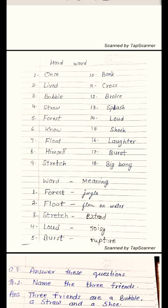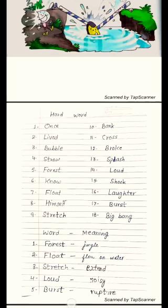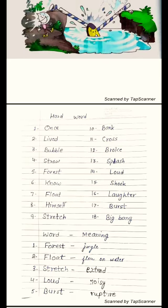Toh ye the hamare hard words. Ab inmen se kuch ki humne meaning banayi hai. Word meanings: Forest — bahut saare ped jahan par ho — jungle. Float — tairna, to flow on water, paani ke upar bahna. Stretch — S-T-R-E-T-C-H — apne ko phailaana, it means to extend. Loud — bahut tez awaaz se, its meaning is noisy — N-O-I-S-Y. Burst — phootna, kisi cheez ka fatna. Isko hum rupture bhi kehte hain — R-U-P-T-U-R-E.